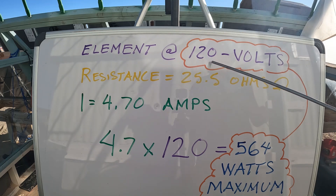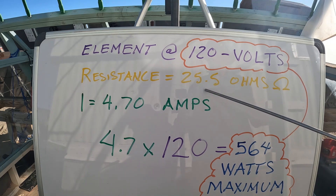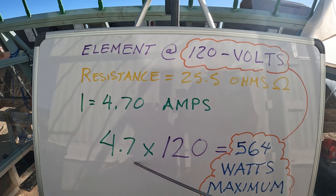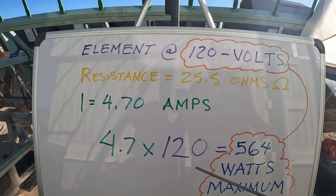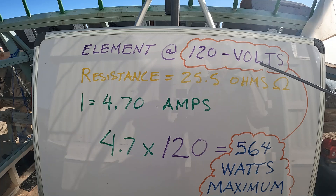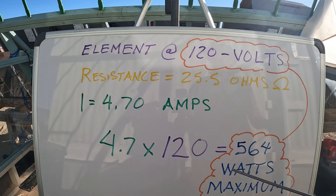When running that element on 120 volts, the resistance measures at 25.5 ohms. Doing the math gives 4.7 amps. Take 4.7 amps multiplied by 120 volts and you get 564 watts maximum. I had it running at 850 watts — it was getting really hot — but it'll get even hotter at the correct voltage. So I bucked it down to 510 watts; my solar panels can supply up to that level, so it should be fine now.